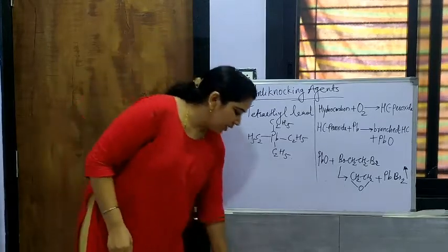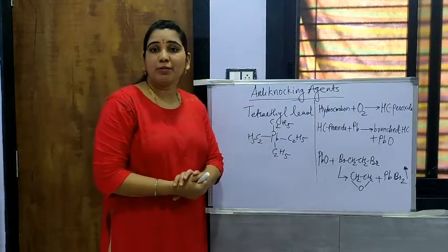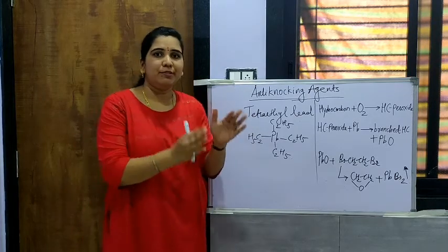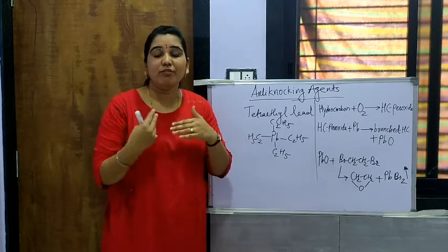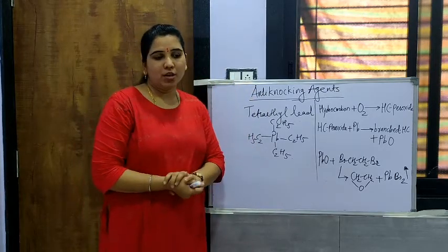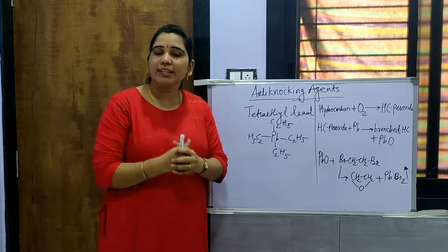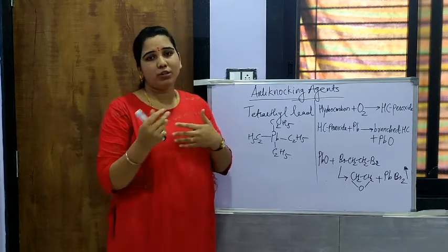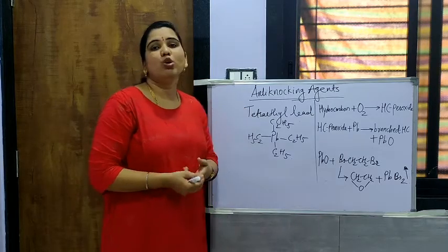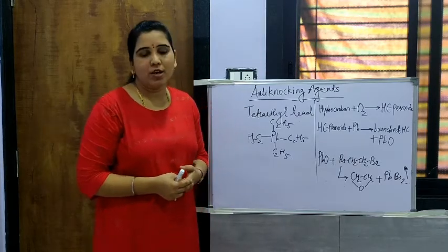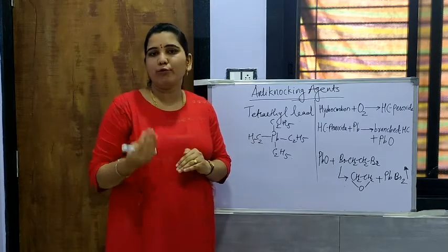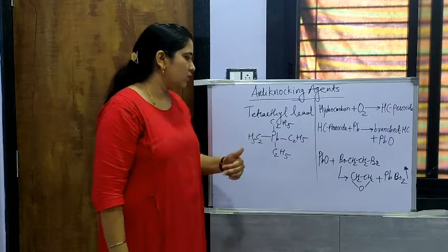Hello students. Now we have to see the next topic after knocking, which is anti-knocking agents. As we have seen, there are different chemical structures and their effect on knocking tendency. Now, to reduce the knocking tendency of internal combustion engines of the gasoline type of vehicles, there must be use of some anti-knocking agents. Anti-knocking agents are those substances which are used to reduce the tendency of knocking.